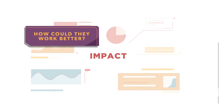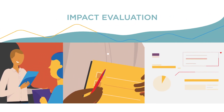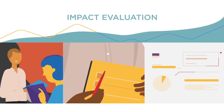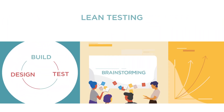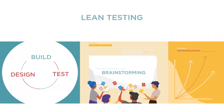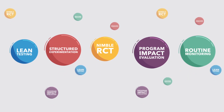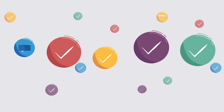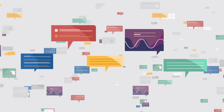To answer these questions, some advocate for impact evaluations using randomized control trials. Others for lean testing, qualitative feedback, or other forms of experimentation. But which method is right? They all are. The key is getting the right feedback at the right time.